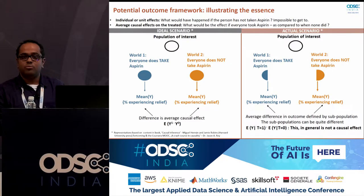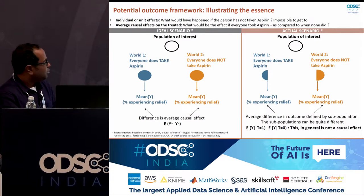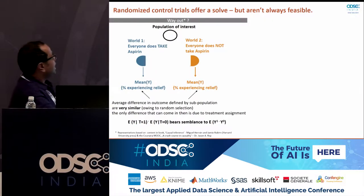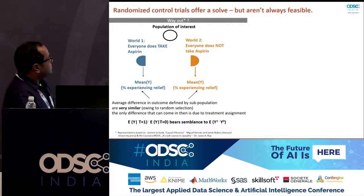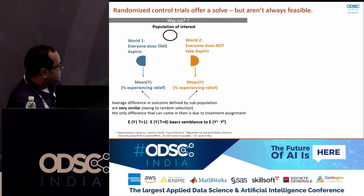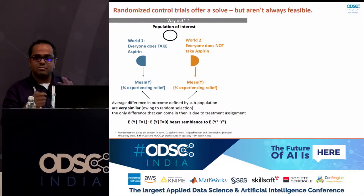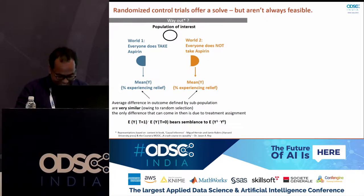There is something called a randomized controlled trial, or what we call in the industry as A-B testing. A-B testing takes the set of folks and randomly splits them into two parts. When it does this randomization, it ensures the folks in these two subsets are roughly similar and comparable in overall characteristics. This means that if you take the percentage experiencing relief and find the difference, you can come close to the ideal state. A-B testing in the truest sense is really the gold standard when it comes to getting to causal reads.